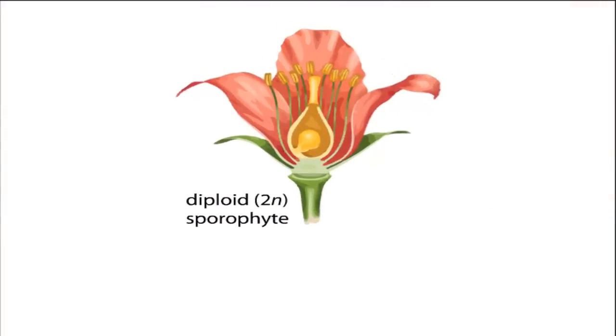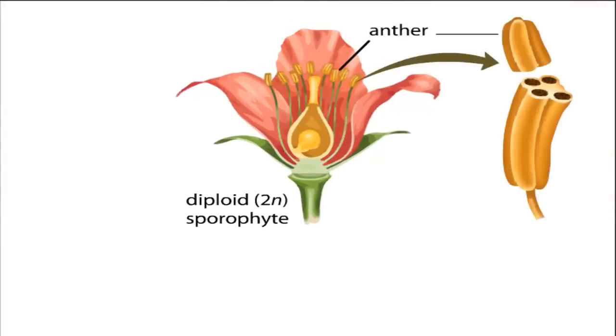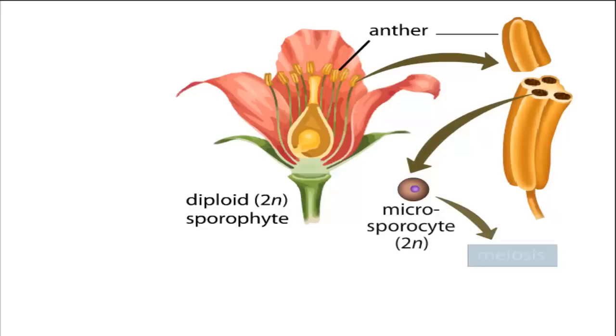Within the flower's male parts, called the anthers, are millions of diploid spores called microsporocytes. These microsporocytes divide by meiosis to produce haploid microspores.